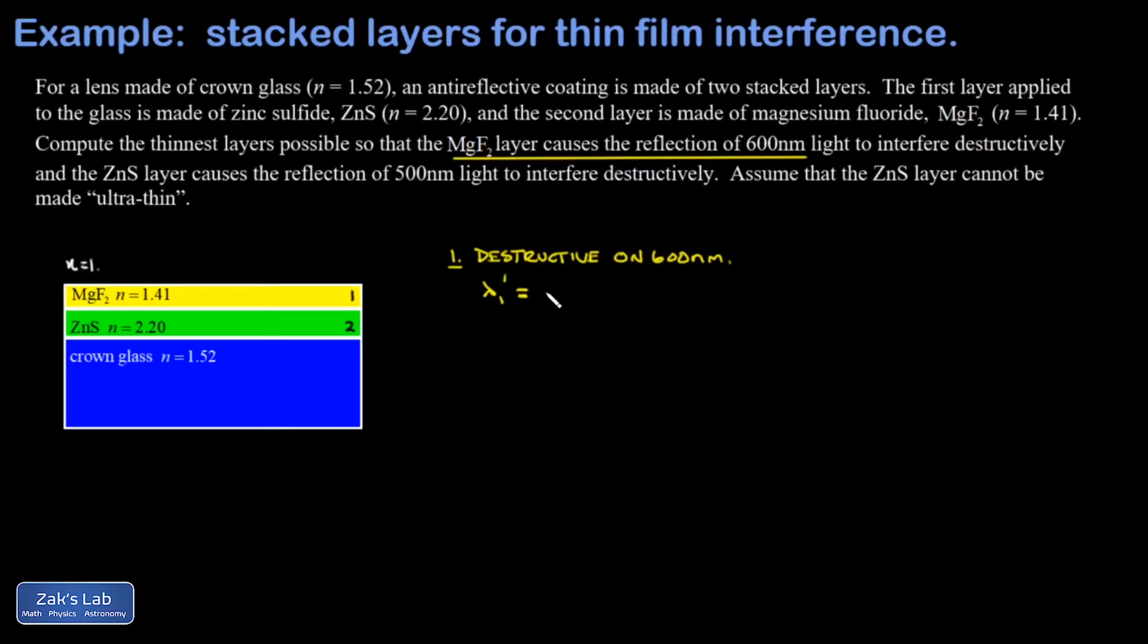I'll post a link back to the video where all this thin film math was first introduced, but it turns out the wavelength of the light in the material is given by the wavelength in air or vacuum, that's our 600, divided by the index of refraction of the material. When I do that calculation, I get 425.5 nanometers.